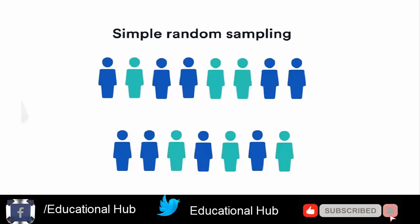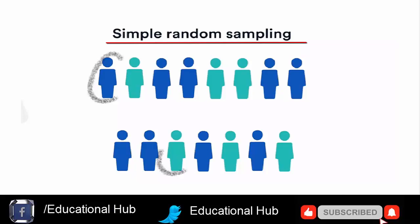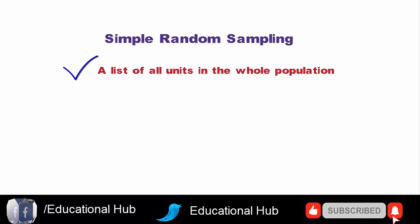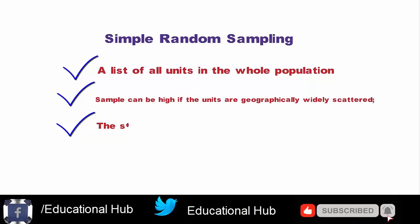Simple random sampling: The simple random sample means that every case of the population has an equal probability of inclusion in the sample. Disadvantages associated with simple random sampling include: 1. A complete frame — a list of all units in the whole population is needed. 2. In some studies, such as surveys by personal interviews, the costs of obtaining the sample can be high if the units are geographically widely scattered. 3. The standard errors of estimators can be high.